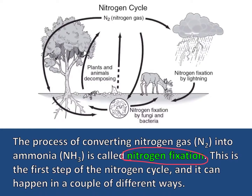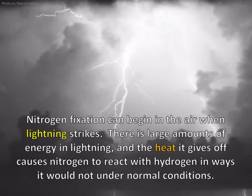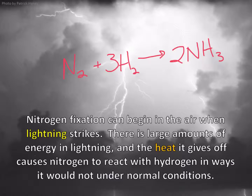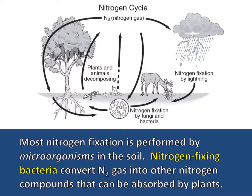Nitrogen fixation is the first step of the nitrogen cycle and it can happen in a couple of different ways. Nitrogen fixation can begin in the air — when lightning strikes, there are large amounts of energy, and the heat it gives off causes nitrogen to react with hydrogen in ways it would not under normal conditions. This chemical reaction between nitrogen and hydrogen produces ammonia.